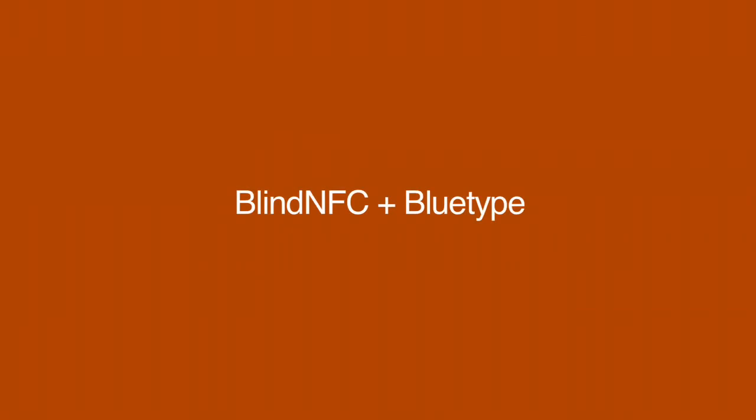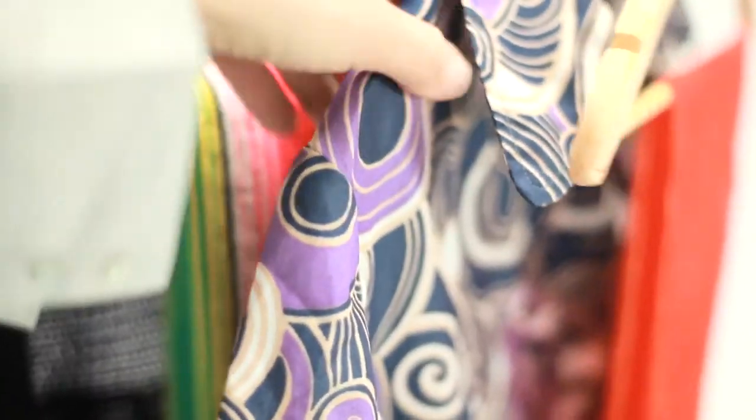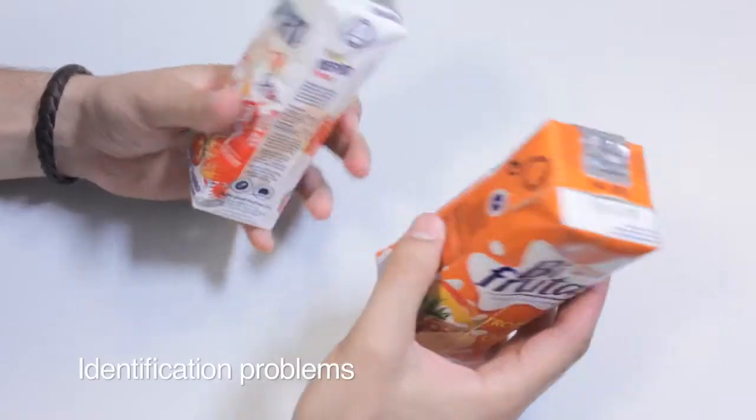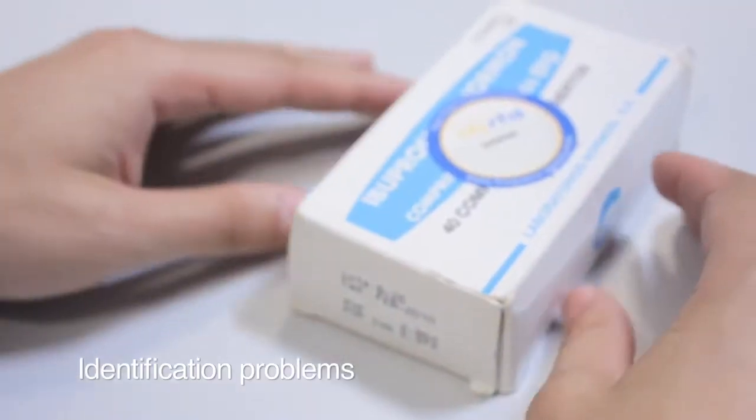Blind NFC, Bluetooth. Identifying which garments match together, the contents of a box, the ingredients of a nourishment, the expiry date of a medicine.